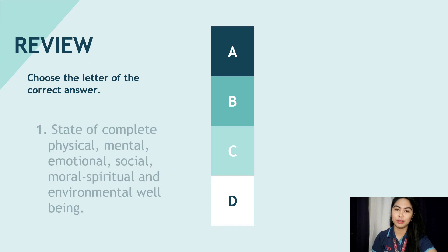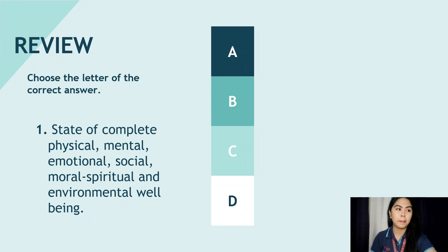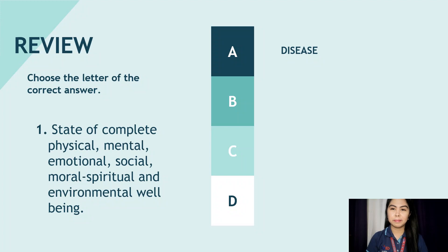I'm just going to read the questions once and I'll give you time to choose. Number one: State of complete physical, mental, emotional, social, moral, spiritual, and environmental well-being.